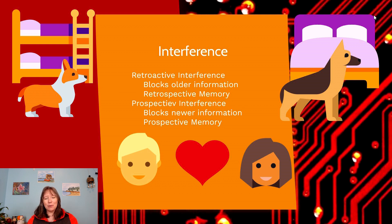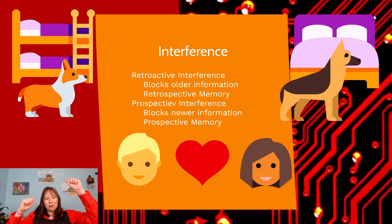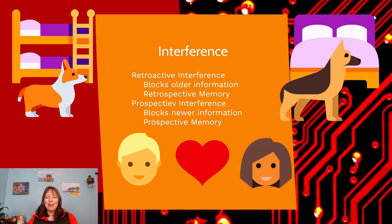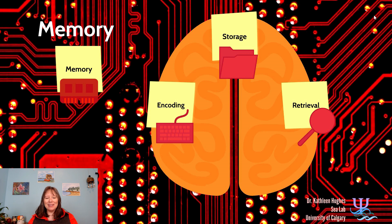Proactive interference is different — here, old memories are so salient that we can't encode or retrieve new information. For example, you go to climb into bed and put your hands up to climb a bunk bed, forgetting you no longer sleep in one. You call your current pet by your old pet's name, or you call your significant other by your previous partner's name. A common example is passwords — you keep entering your old password because the new one is so new you've only entered it a few times.